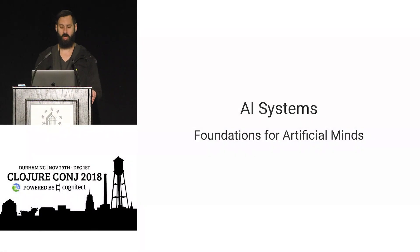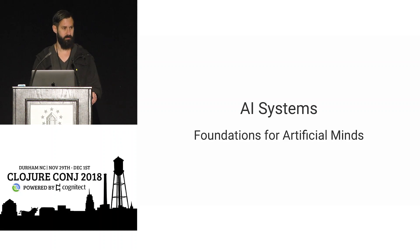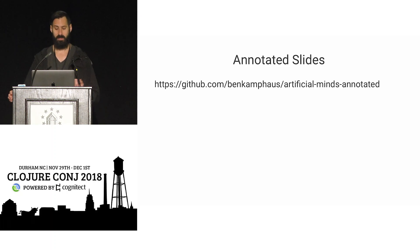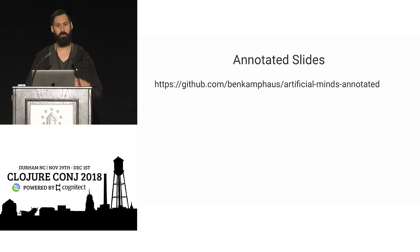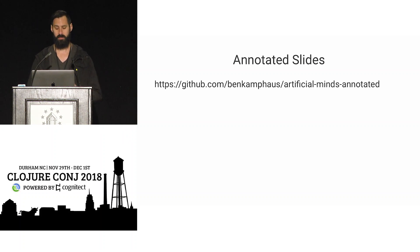My talk is about how to build artificial minds and the way a systems approach is foundational to that — both in building the kinds of systems that you could say are minds possibly, and the kinds of systems it'll take to get us to that point. I'm going to move fairly quickly. A lot of this talk goes into technical depth, so I have annotated slides on a repo you can look at for more info, to file issues, ask for clarification, or let me know if certain things were wrong or misleading.